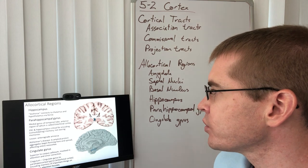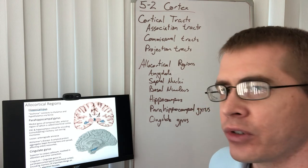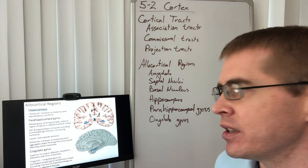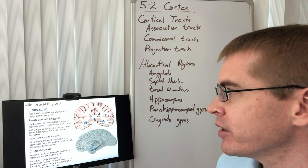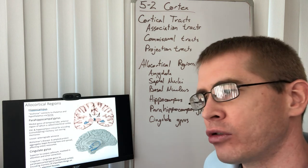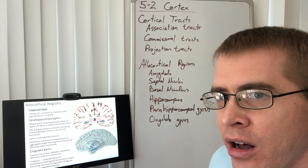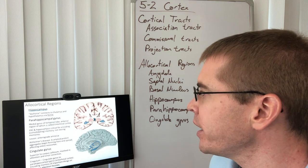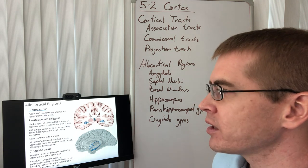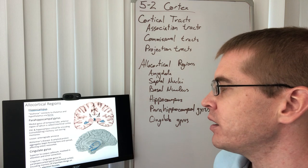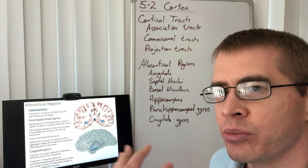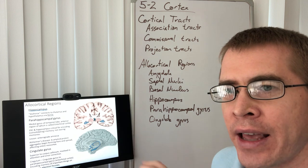So keeping on with the theme of the allocortical structures, of course, we have the hippocampus important for consolidating those memories. Again, memory is not stored in the hippocampus. It's not stored in the parahippocampal gyrus, but it triggers the formation, the connection of those neural connections that are firing at any given moment. And then we've already talked about the fornix and how that connects to the hypothalamus, the mammillary bodies, as well as has projections to the septal nuclei and the thalamus.